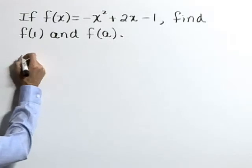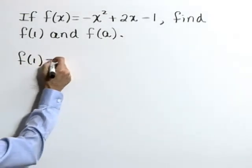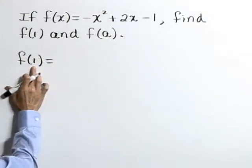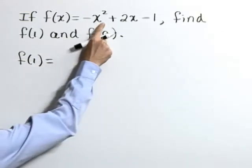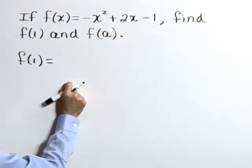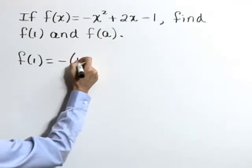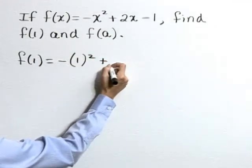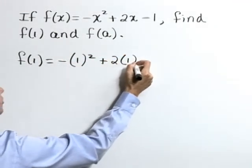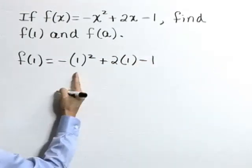Let's start with f of 1. This indicates that we should substitute the value 1 in for x in our function so that it becomes negative 1 squared plus 2 times 1 minus 1. And let's evaluate.